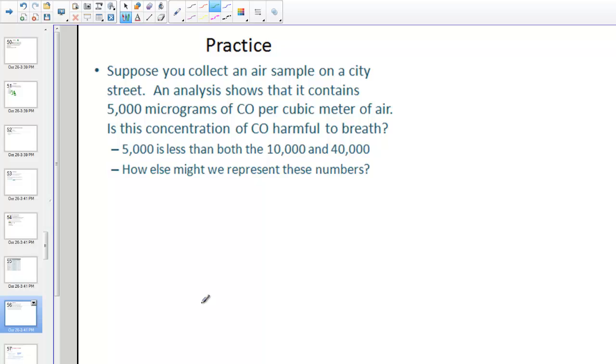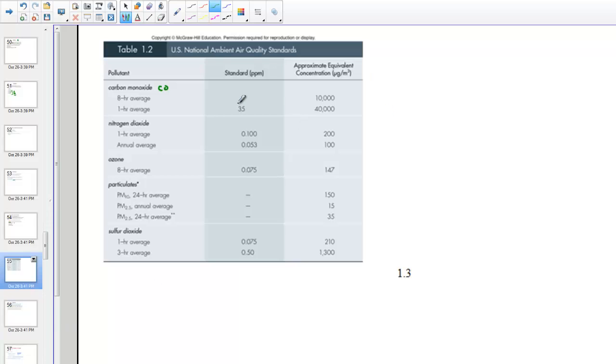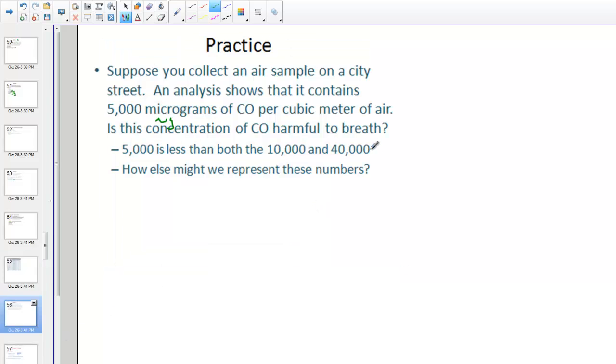This is a practice problem, just kind of a thought problem placed for us in our text. Suppose you collect an air sample on a city street. The analysis shows that it contains 5,000 micrograms of carbon monoxide per cubic meter of air. Is this concentration harmful to breathe? And so what it's really having us do is just go back and check. Remember how we're allowed for an average eight hour period, 10,000, but just a one hour, 40,000 micrograms per cubic meter. And so you can see that that's less than either one of those standards. And so it is not reaching a toxic level.